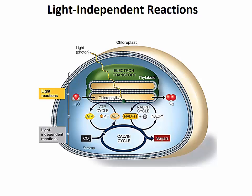We have seen in the previous videos that ATP and NADPH are produced in the light-dependent reactions that occur in the thylakoid membranes of chloroplasts. ATP and NADPH are used as a source of energy to power the synthesis of carbohydrates by the light-independent reactions that occur in the stroma as well.